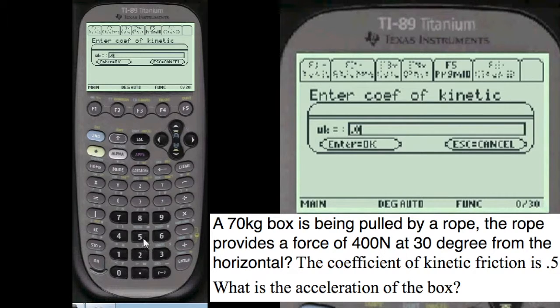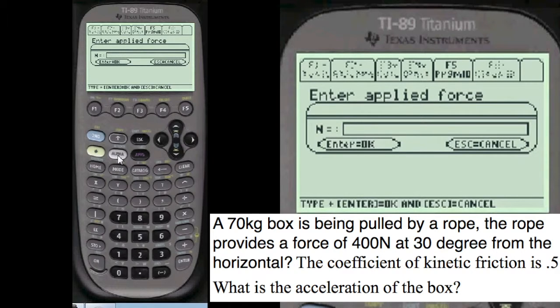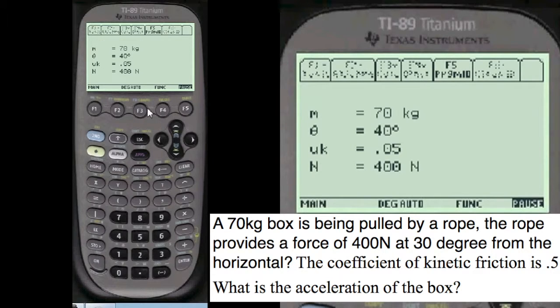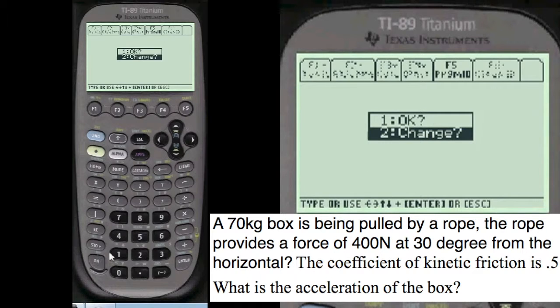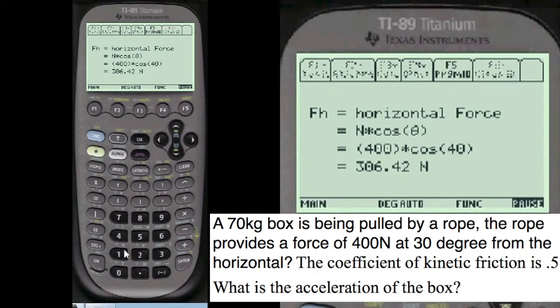70 kilograms. Angle is 40. UK is alpha, 0.05. And the force is 400. That's better. We've entered it correctly now. Say it's okay.